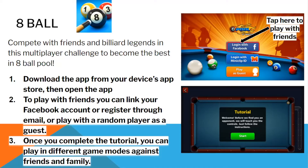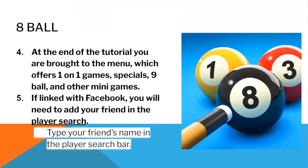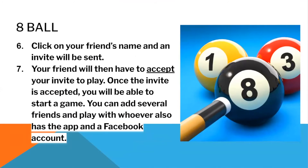Once you complete the tutorial, you can play in different game modes against friends and family. At the end of the tutorial, you are brought to the main menu which offers one-on-one games, specials, 9-Ball, and other mini games. If linked with Facebook, you will need to add your friend in the player search by typing your friend's name in the player search bar. Click on your friend's name and an invite will be sent. Your friend will then have to accept your invite to play. Once the invite is accepted, you will be able to start a game. You can add several friends and play with whoever also has the app and a Facebook account.